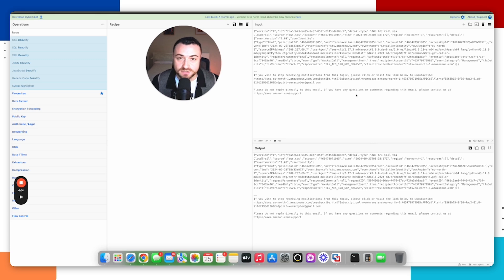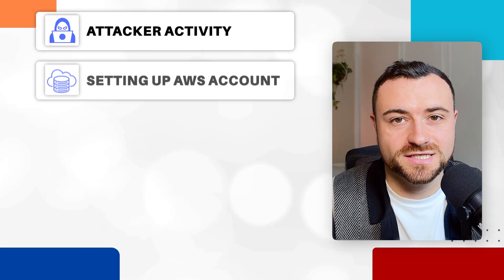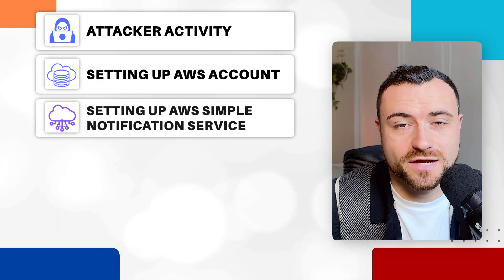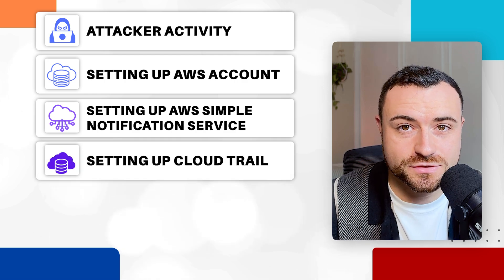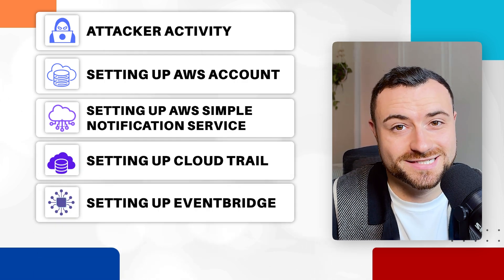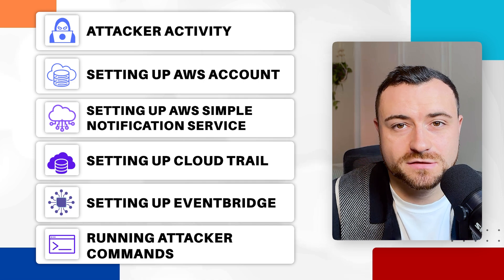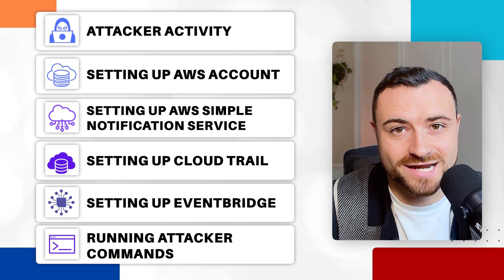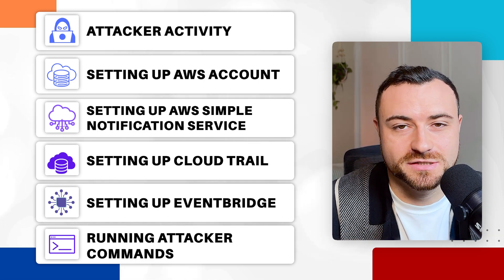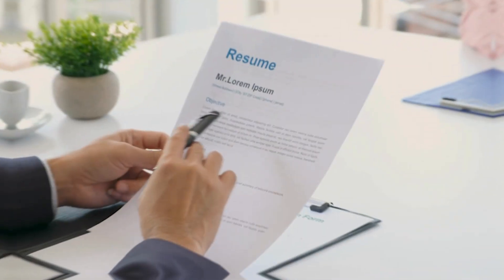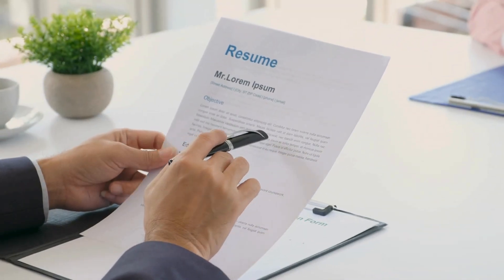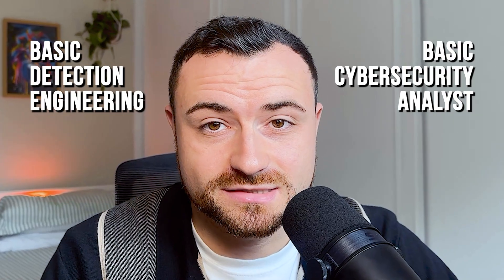This is very similar to an alert that a cybersecurity analyst would get, and you'd then be required to investigate further. To conclude: you've been able to set up your own free tier AWS account, use Amazon SNS, EventBridge, and CloudTrail to detect potential attacker activity, run attacker commands on your machine to test it, and analyze the alert just like a cybersecurity analyst would. These are the exact things you should be writing on your resume and CV to tell potential employers — this is basic detection engineering and cybersecurity analyst analysis.